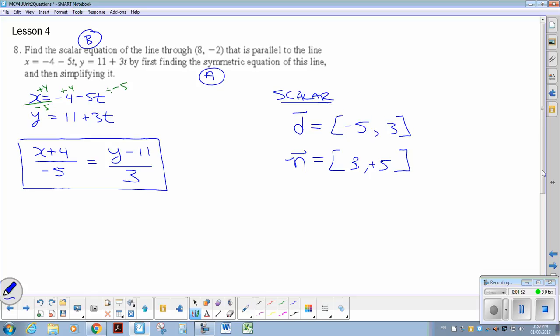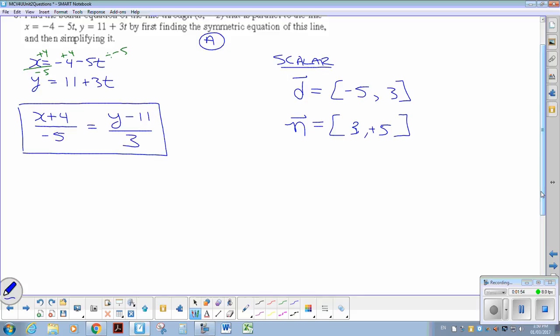Now to finish this off, to find the equation, I like doing the OA dot the normal and setting it equal to 0. You can do it with the substitution method as well. Both are equally effective.